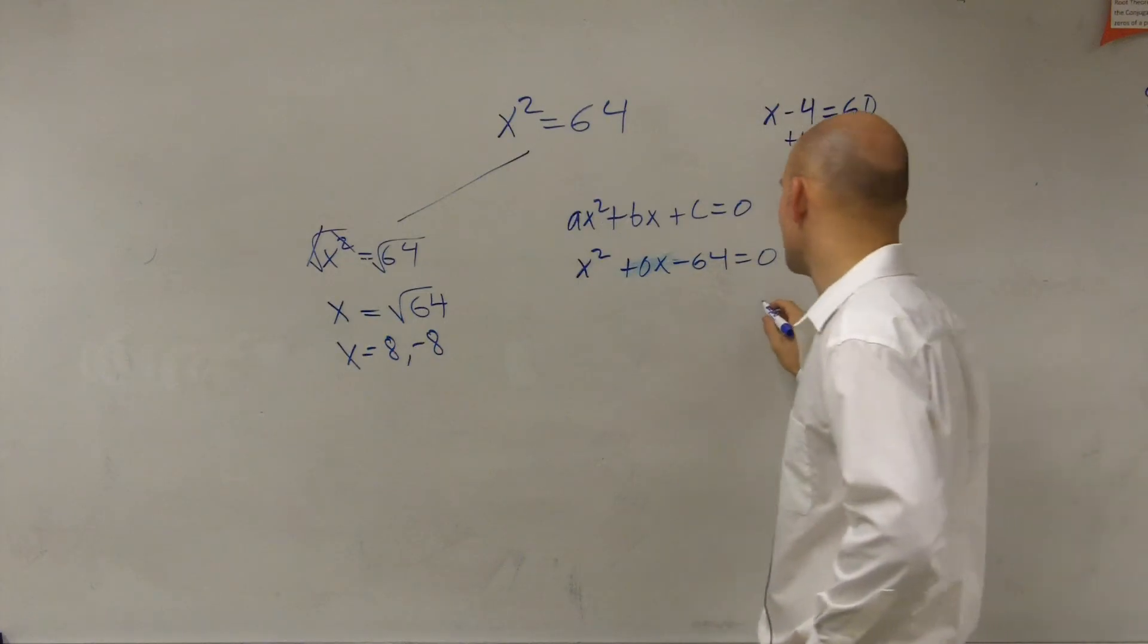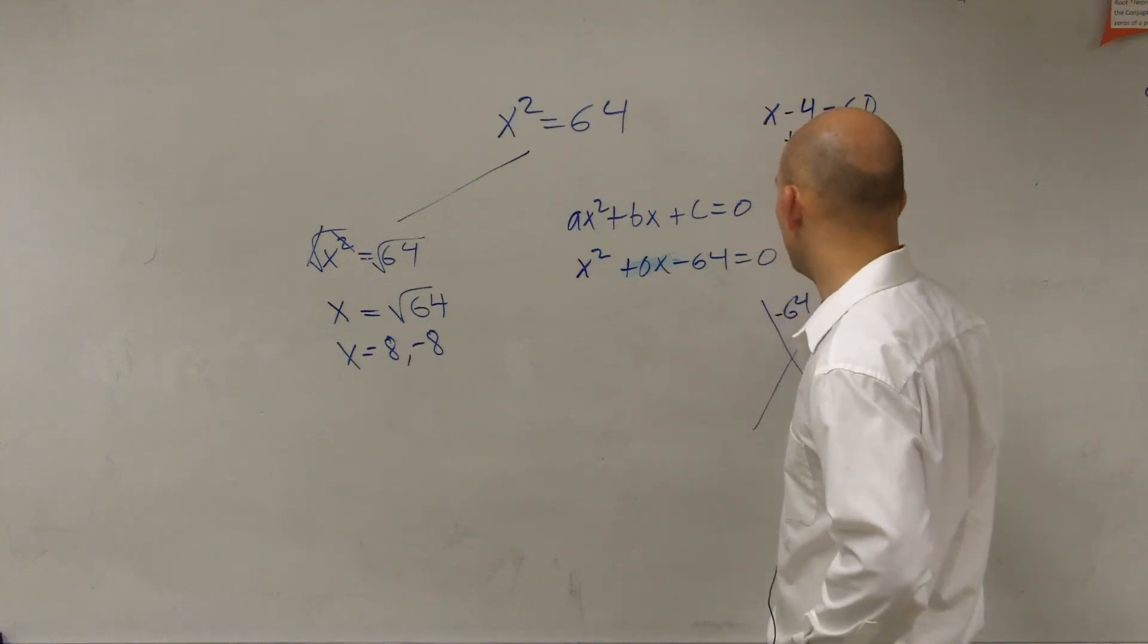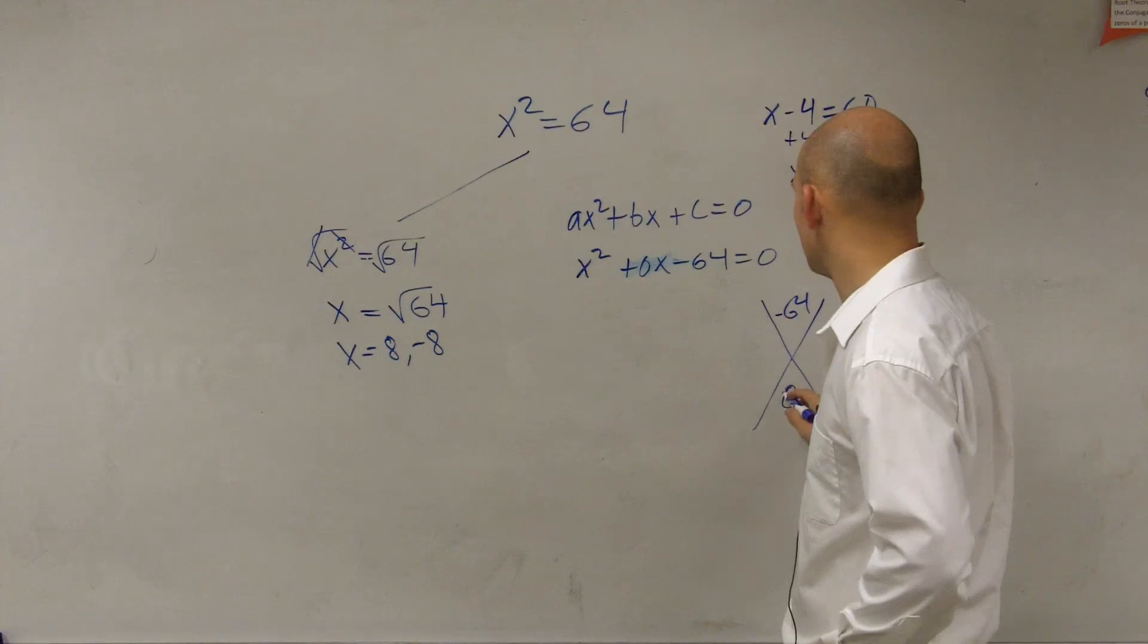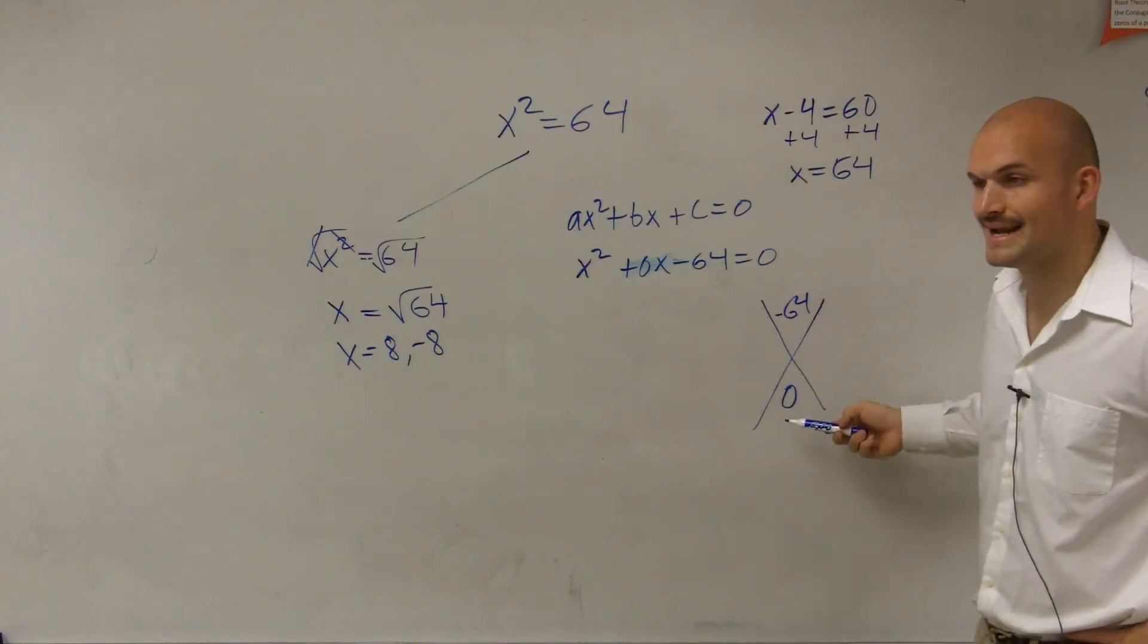So now, how do we practice solving by factoring? Well, we said negative 64 and then we said 0. So what two numbers multiply to give you negative 64 but then add to give you 0?